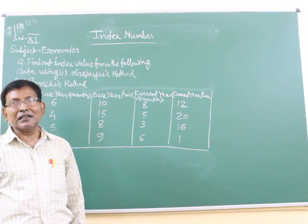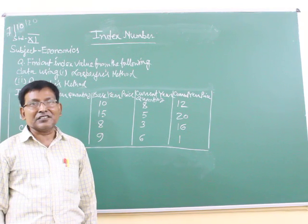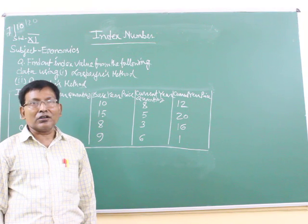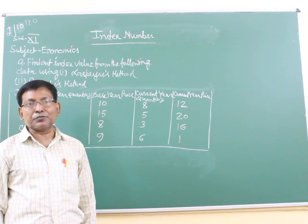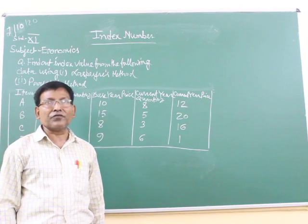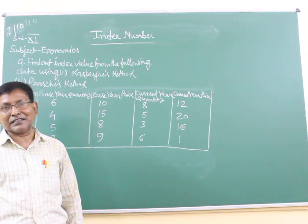Index number is a statistical measure to show the change in the variable or a change in the related variables with respect to time, with respect to geographical area, or with respect to some other characteristics.